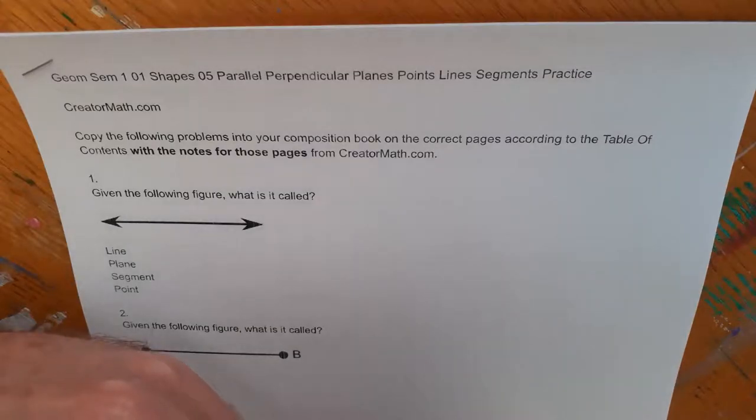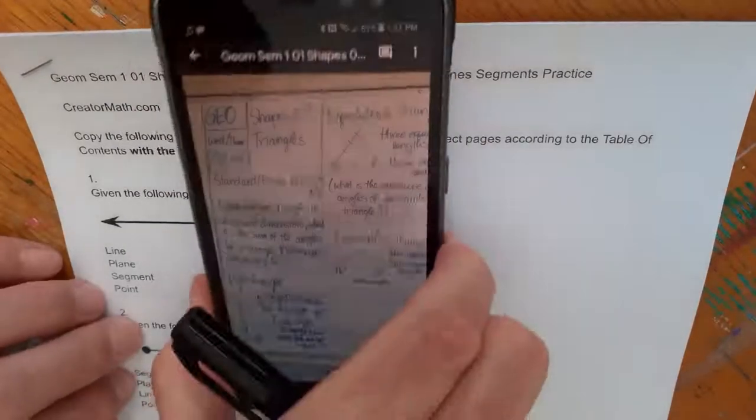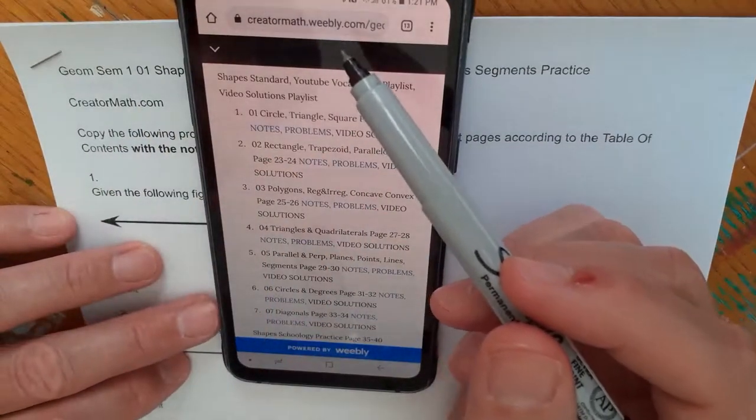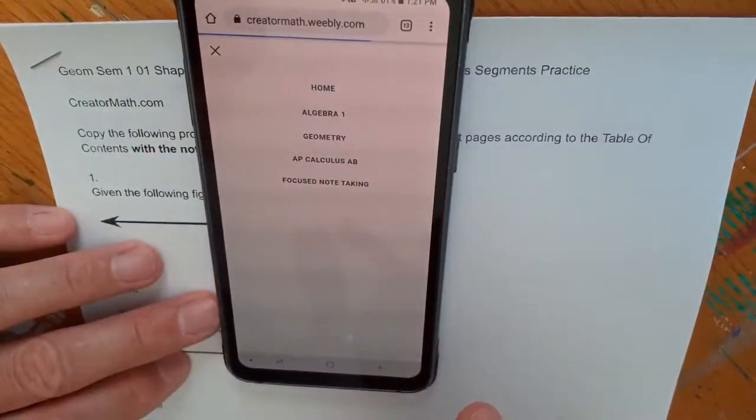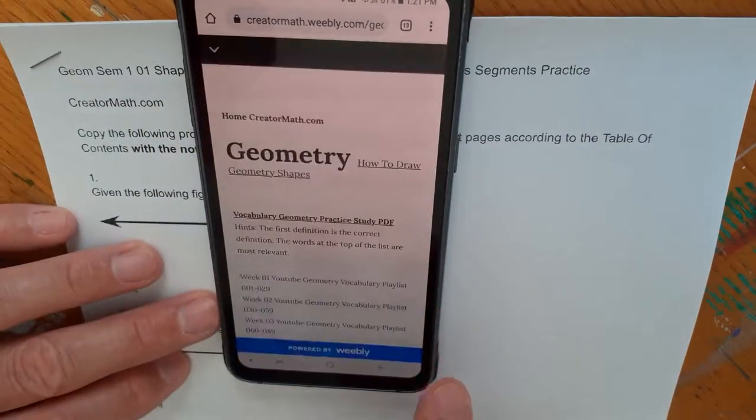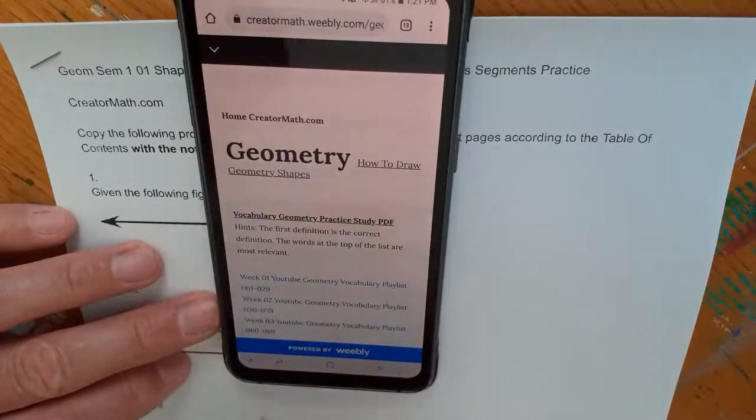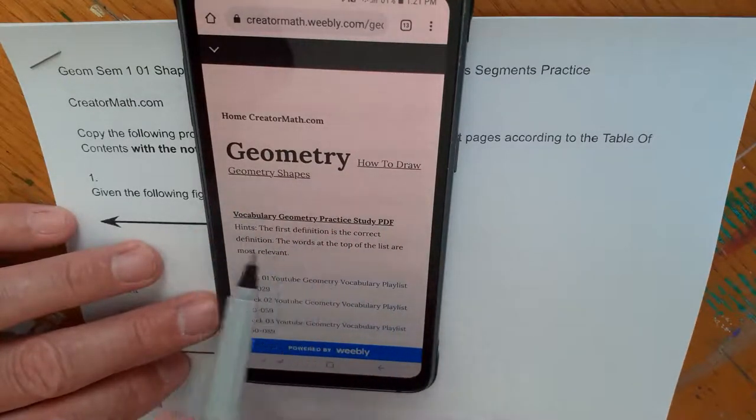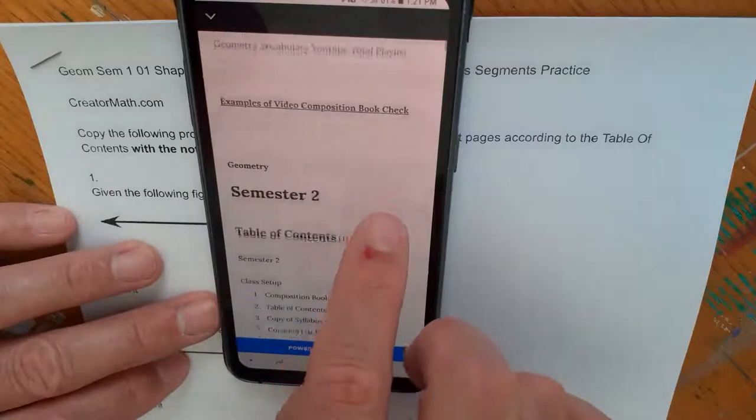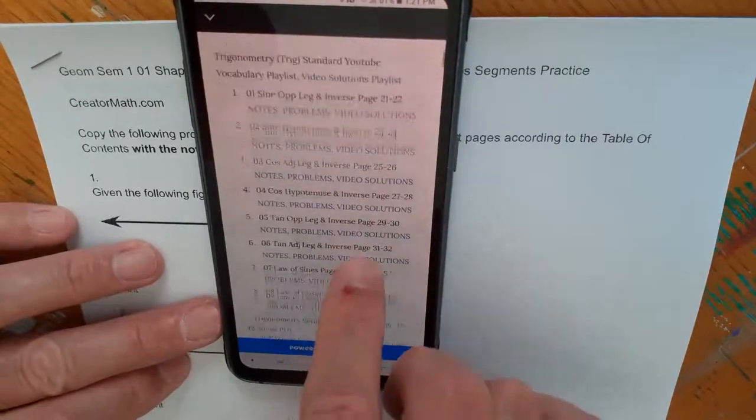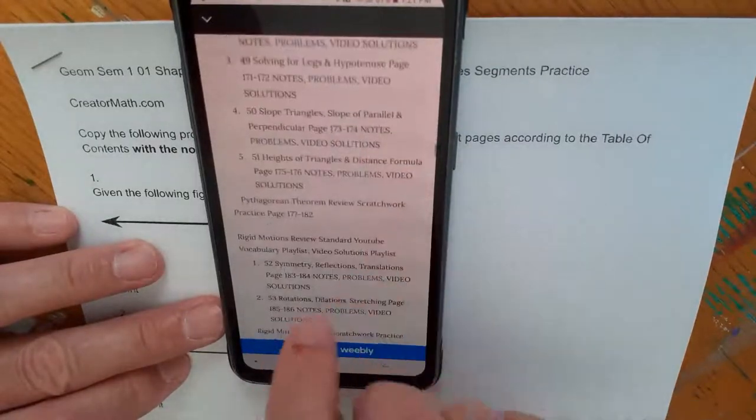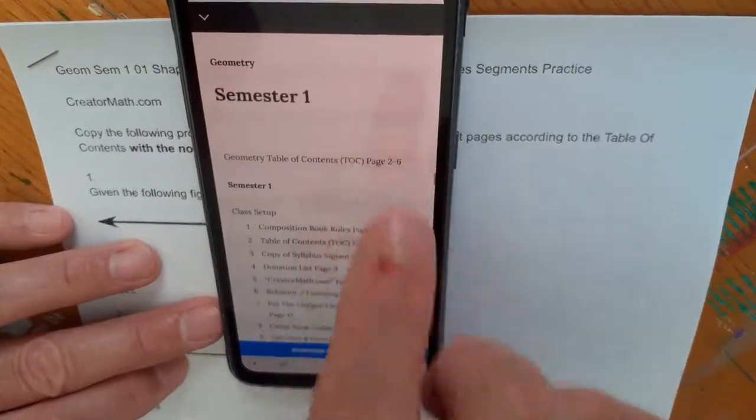Let me model for you where those notes are. Go to creatormath.weebly.com. The homepage looks like this. All of your composition book stuff is on this homepage, but we need the notes for Geometry. We're scrolling past semester two, which is up front for an individual reason.